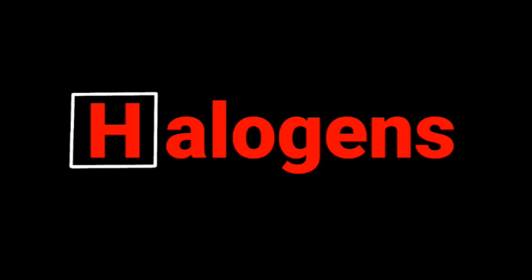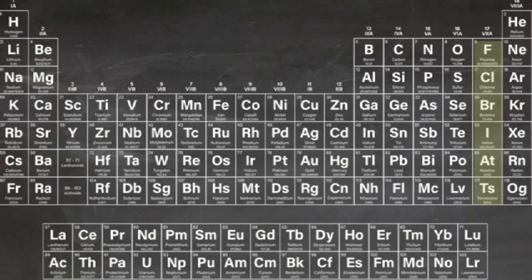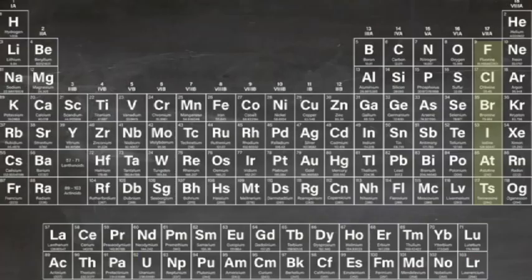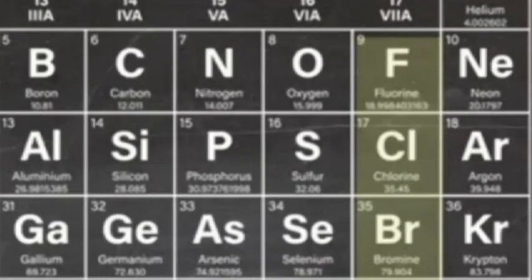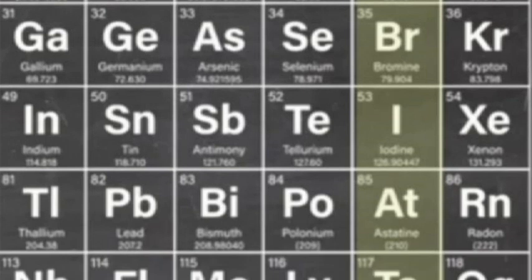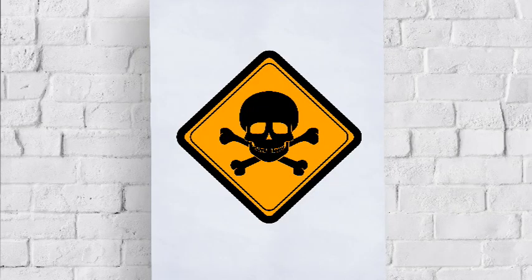Halogens. The halogen elements are a subset of the non-metals. They comprise group 17 of the periodic table from fluorine through to astatine, and since 2016, tennessine. The term halogen means 'salt former'. Halogens are reactive. Fluorine, the first in the list, is by far the most reactive and combines with nearly all of the other elements from the periodic table. As we move down the group 17 column, the halogens decrease in reactivity. Halogens are also toxic.